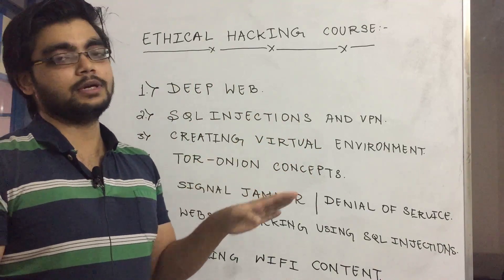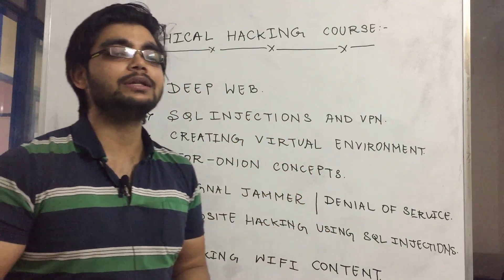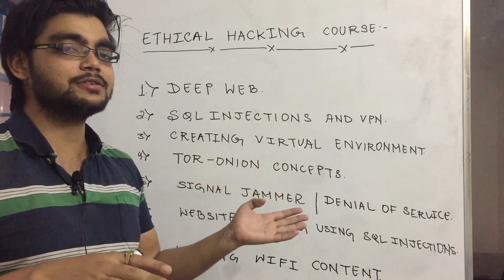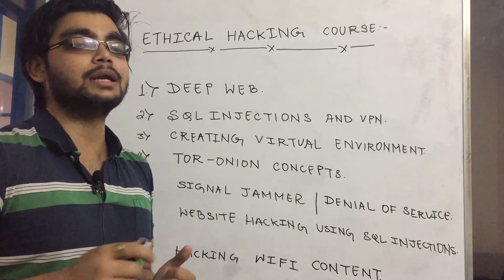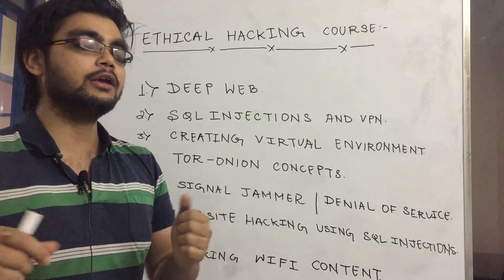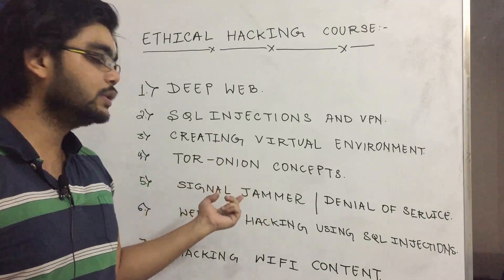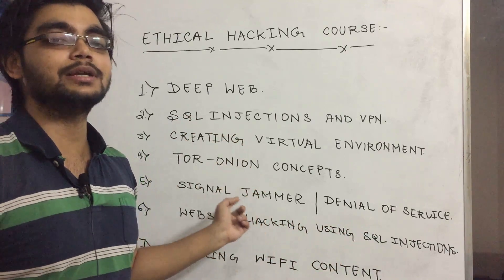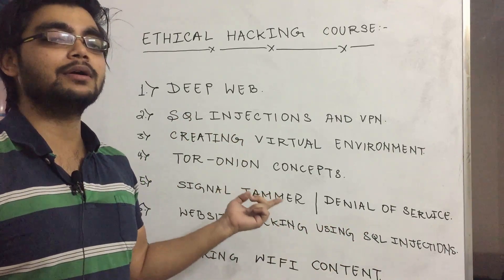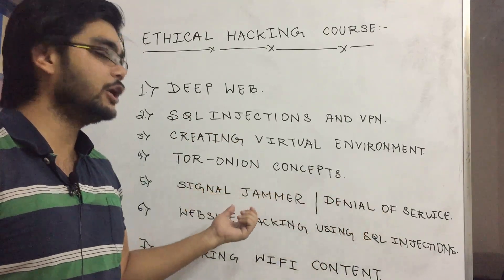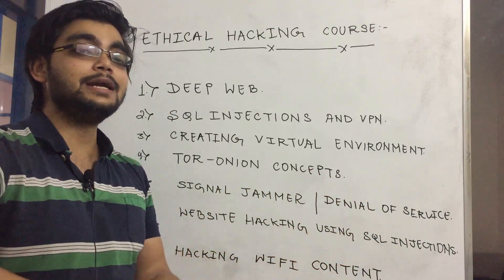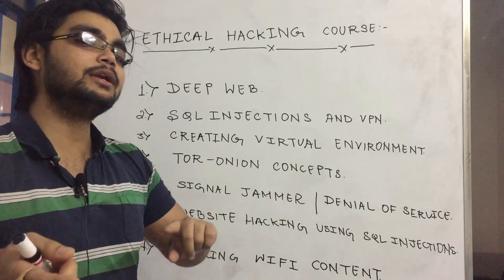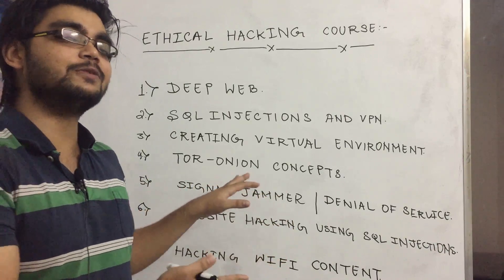Coming to signal jammer and denial of service attack. In cyber security there are various types of attacks and techniques you will be learning in this course. We will be building several signal jammers. A signal jammer means you can jam a particular signal like a WiFi signal — if someone has a certain WiFi in a particular area, you can stop that signal, so the WiFi of that person will be stopped. Coming to denial of service attack: you are sending some fake data to that WiFi and it will stop working unless and until it is restarted by the person. These are the cool things we will be learning in this project.